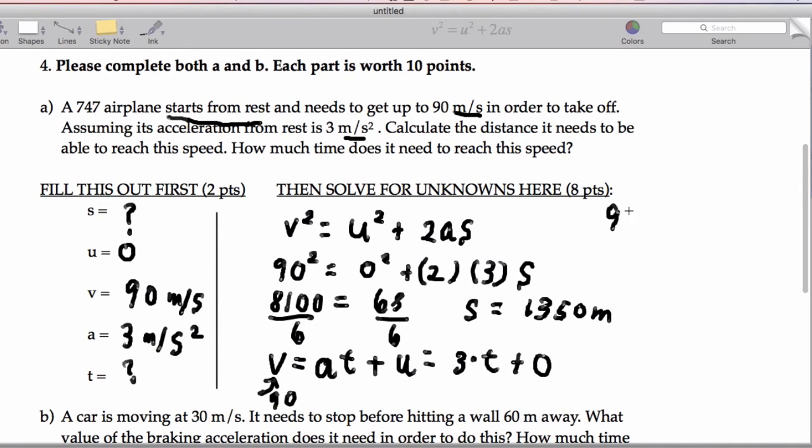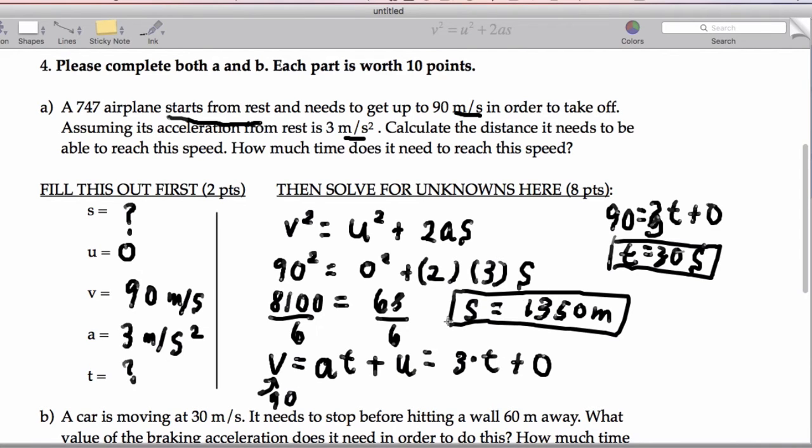Let's just work all that math out over here. So 90 equals a which is 3 times t plus 0, so t ends up being 30 seconds. We have a time and we have a distance. Let me just double check my math on that. Yep, we're good.